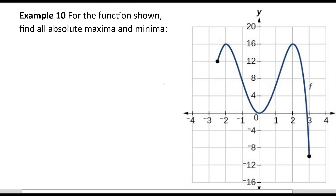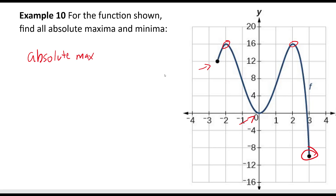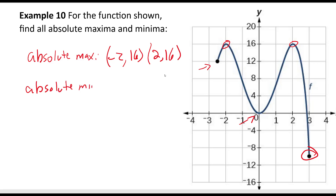For the function shown, find all absolute maximum and minimum values. There appear to be two high points that look like maxima and one relative minimum — but only one is the absolute minimum. The absolute maximum occurs at both (-2, 16) and (2, 16) — note these are ordered pairs, not intervals. The absolute minimum is at (3, -10).